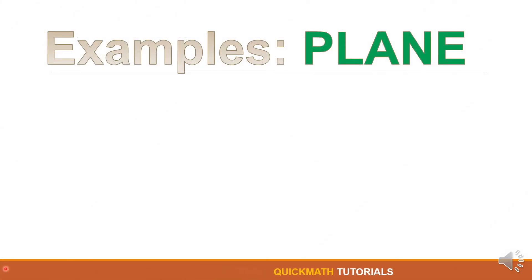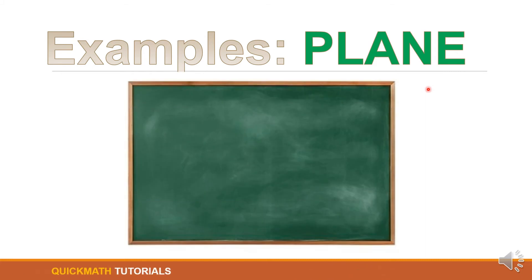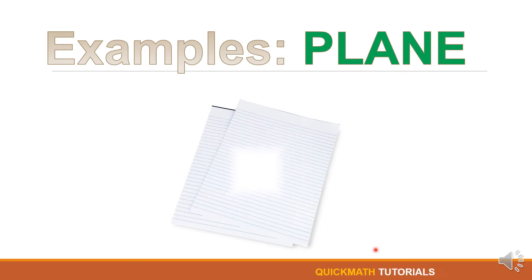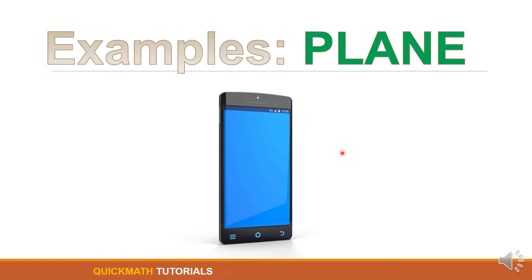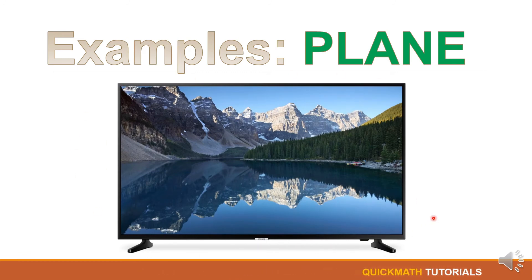Now let's take a look at some examples of a plane which can be seen in real life. The first example is a chalkboard — this is an example of a plane. Another is a piece of paper. Third is a cell phone. And we also have a television. There are still more examples of a plane which you can see in your home or surroundings.